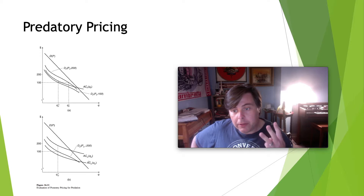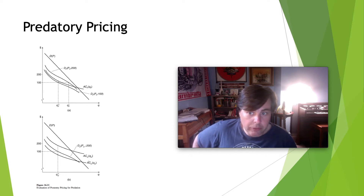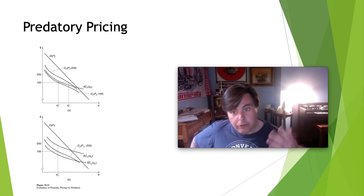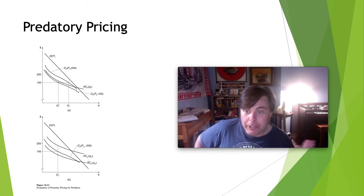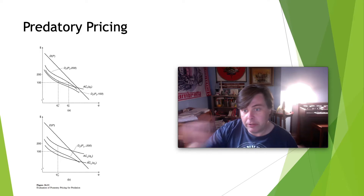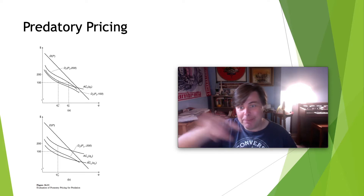The third thing we want to talk about in this lecture is predatory pricing and regulation designed to minimize it, again using transportation as context. We have two airlines: call them small airline F and big airline U. Big airline is operating a given route between two cities fairly close together, charging $200 to fly. Small airline says it can do it for $100, so they start flying for $100.